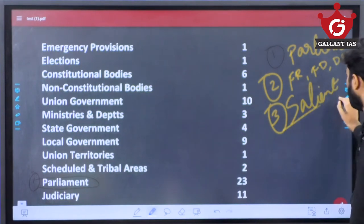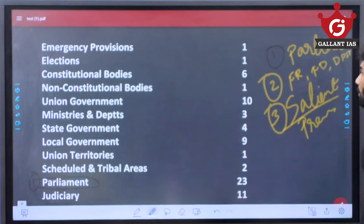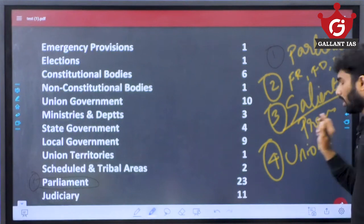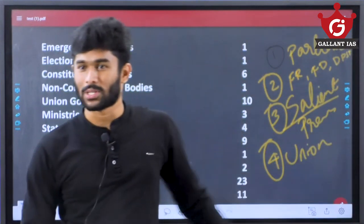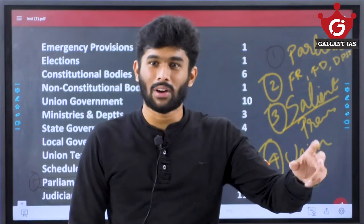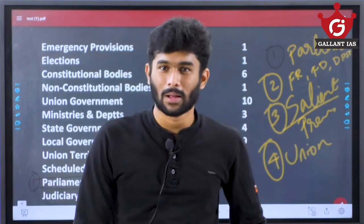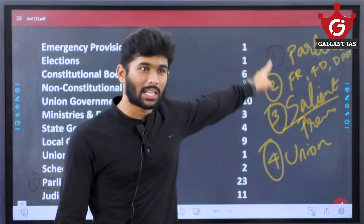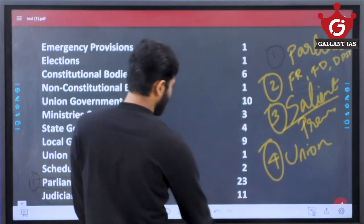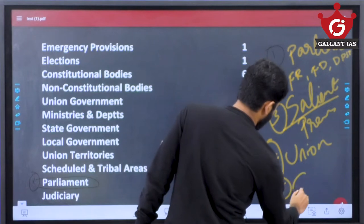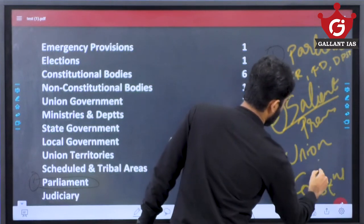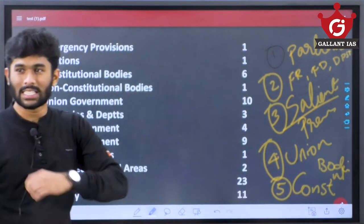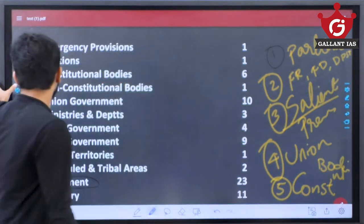In salient features, you will also study the preamble. Fourthly, the executive system, especially at the union level — the Council of Ministers, President, and Vice President — is another major rewarding portion. Constitutional bodies, which are often disregarded, are also one of the most rewarding portions. You must put more stress on these areas in your studies.